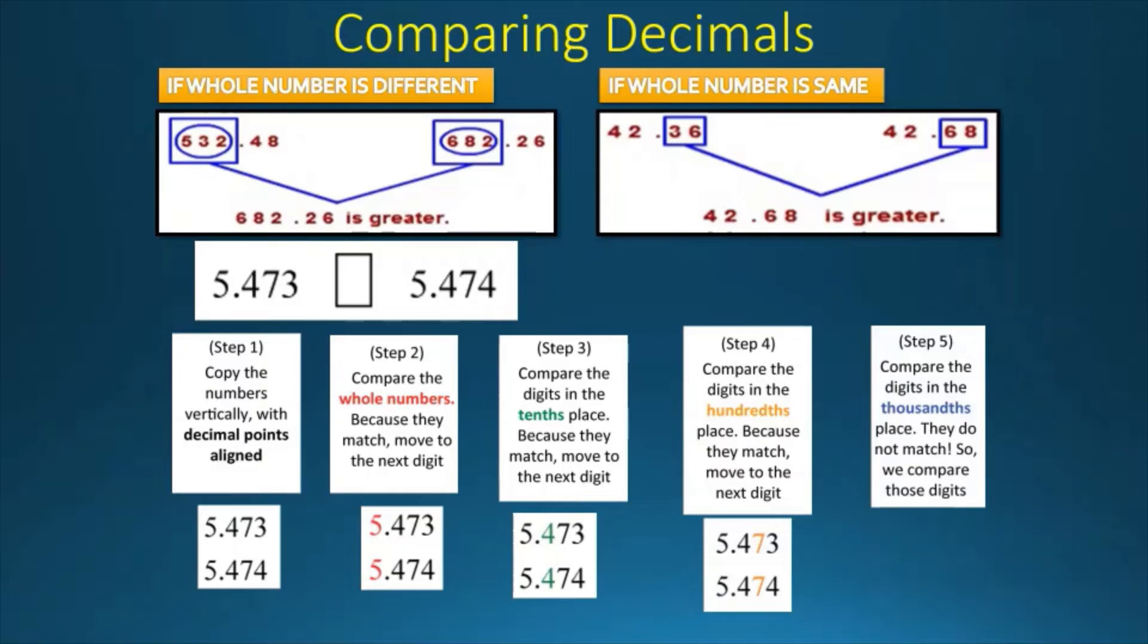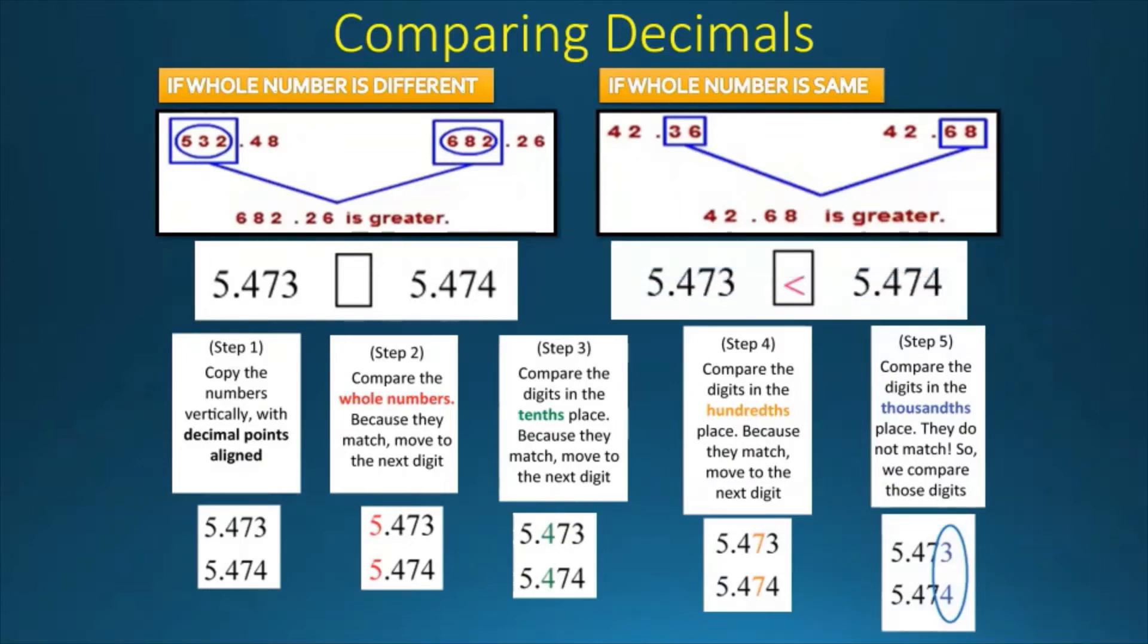We compare those digits. 3 and 4. As we already know, 4 is bigger than 3. Therefore, 5.474 is greater than 5.473. So we have to note that before conclusion, we have to make all the decimal numbers like decimals.